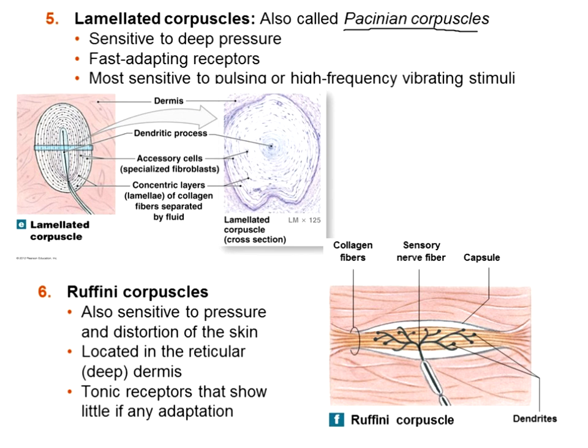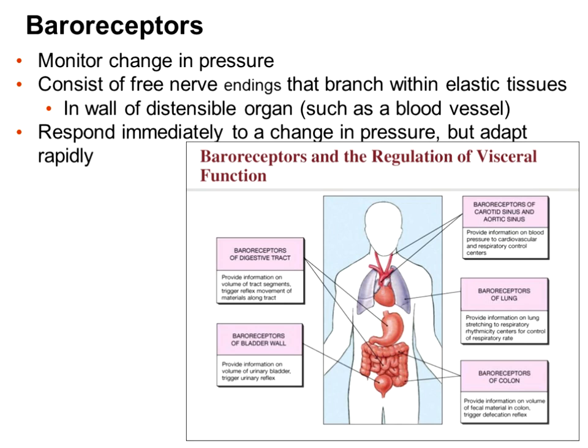The sixth type of skin receptor for pressure and touch is the Ruffini corpuscle. Like Pacinian corpuscles, it is deep — but it is slow adapting and tonic. So you get one of each: slow adapting and fast adapting, located close to the skin and deep in the skin. Together, this overlap gives you a lot of good data points on what you're holding, how you're holding it, its temperature, whether it's painful or vibrating, and how long you've kept it in that position.